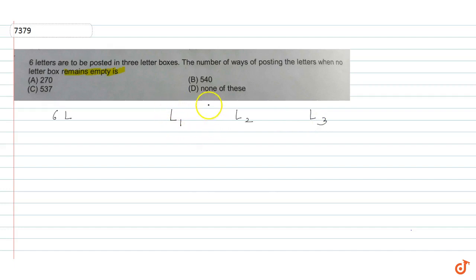And we're given that no letterbox is empty. So let's say letterbox one is X, two is Y, and three is Z. We have the condition that X plus Y plus Z equals six, where X is always greater than zero, Y is always greater than zero, and Z is always greater than zero.